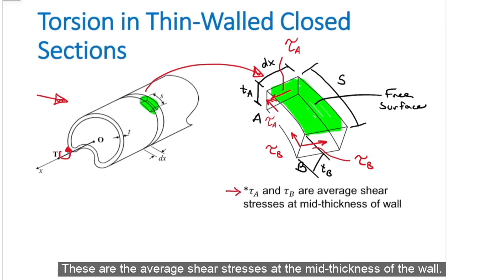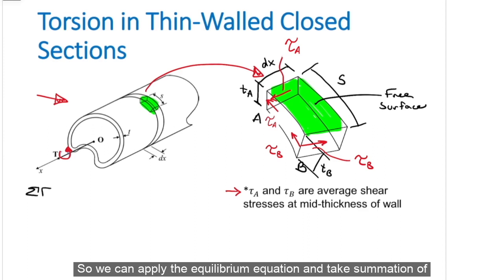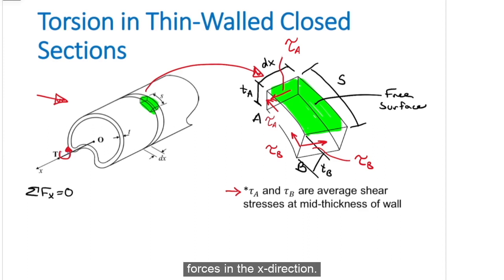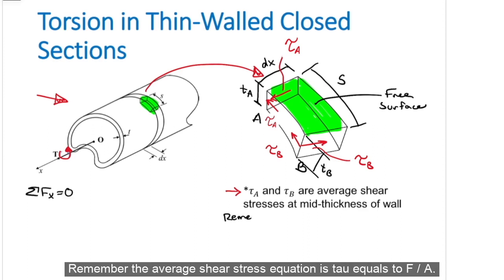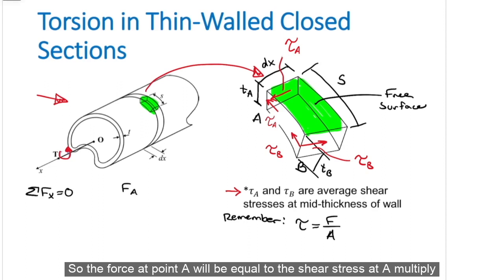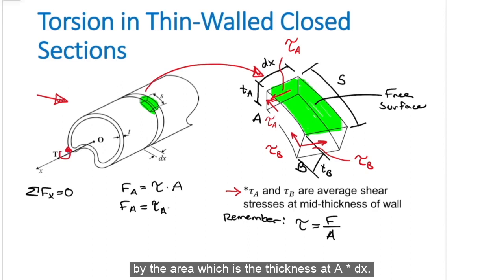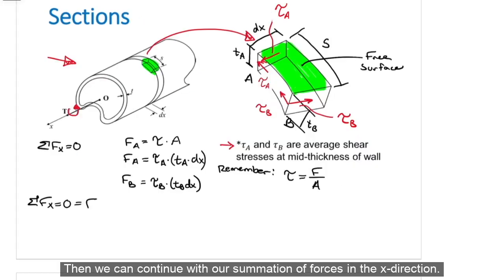These are the average shear stresses at the mid-thickness of the wall, so we can apply the equilibrium equation and take summation of forces in the x direction. Remember, the average shear stress equation is tau equals to F over A, so the force at point A will be equal to the shear stress at A multiplied by the area, which is the thickness at A times dx. The same can be done for the force at B.